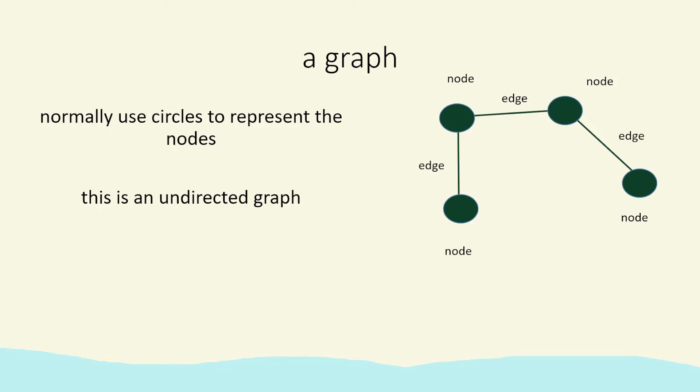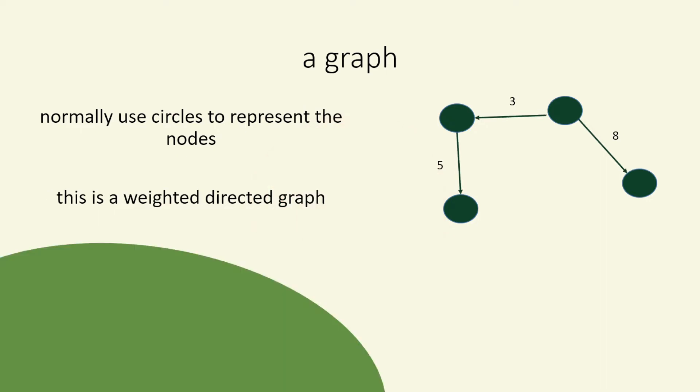This is an example of an undirected graph. If we want a directed graph, instead of lines we use arrows so we know which direction we go in. We can also use weights so this is a weighted undirected graph. And this is a weighted directed graph.